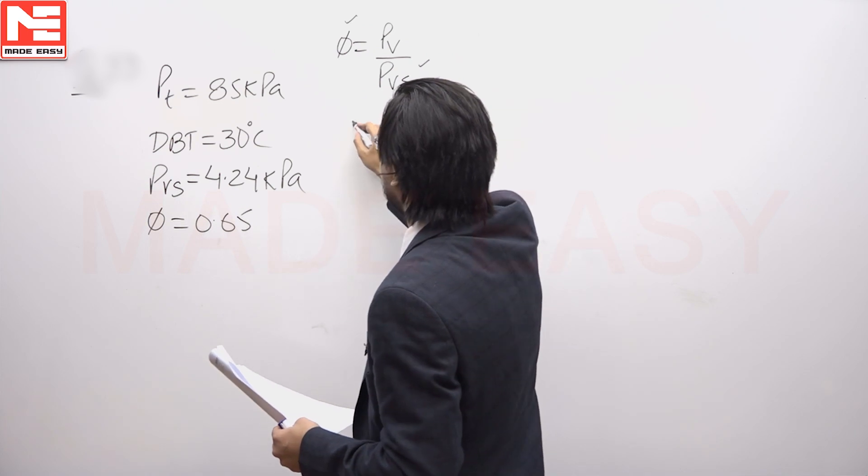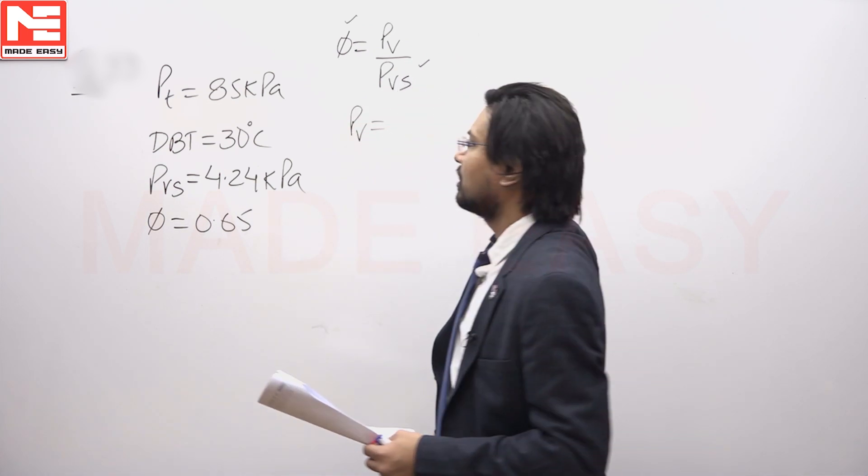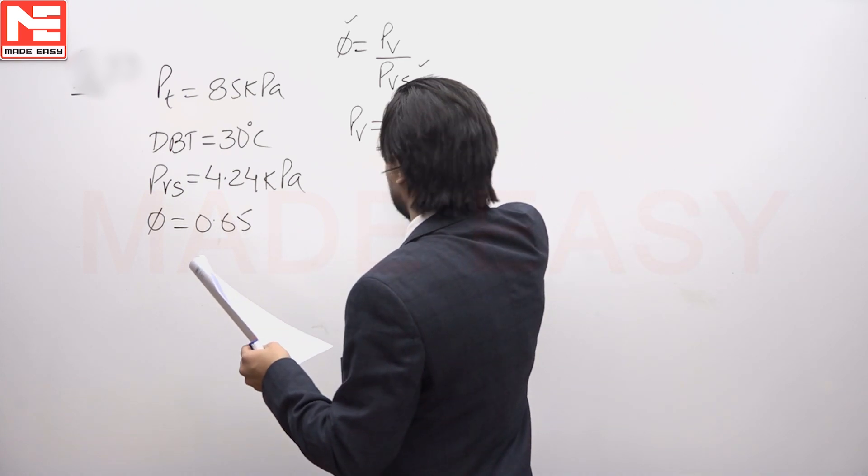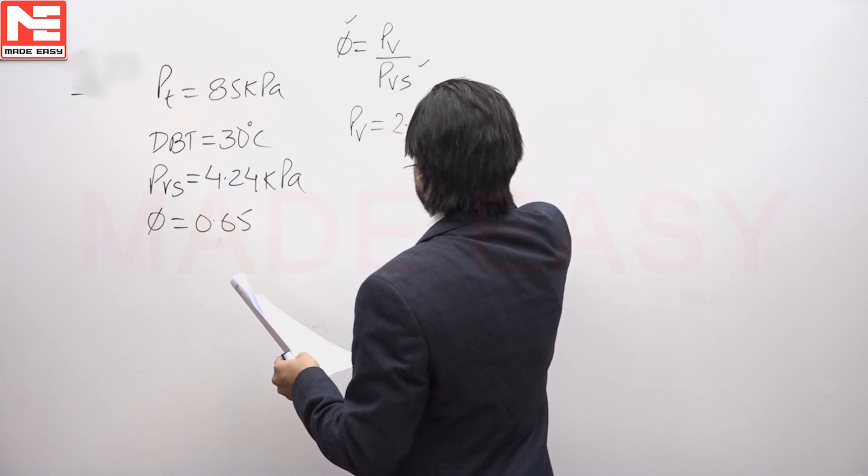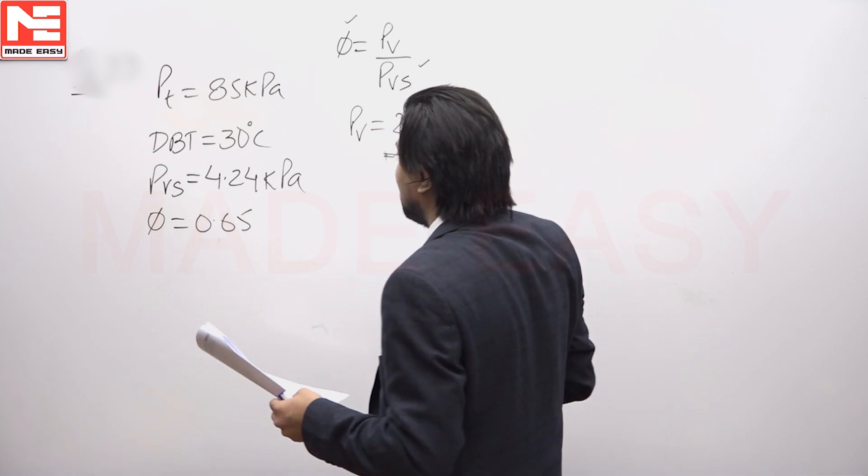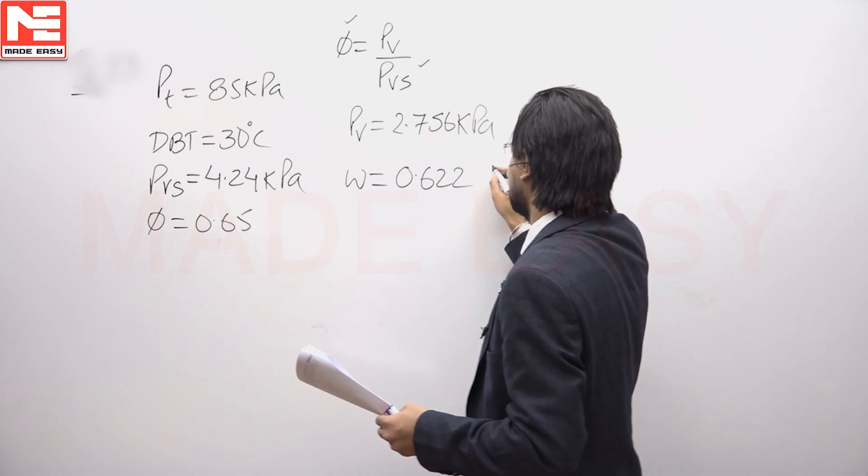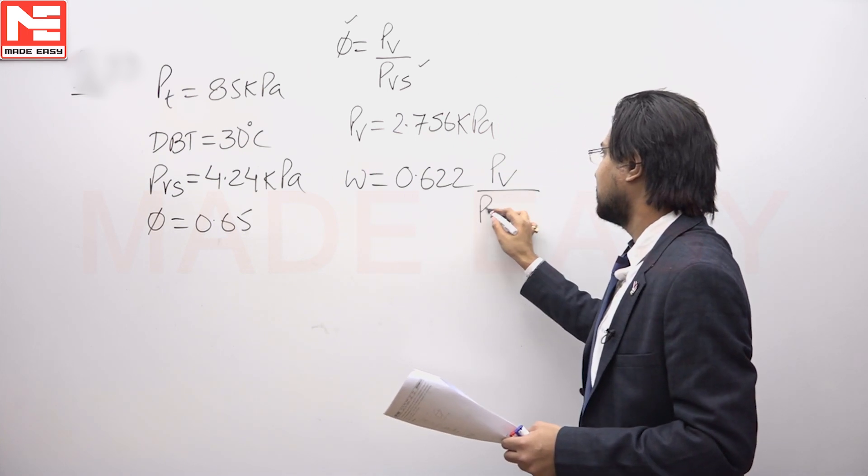This is known to us. We will find out the partial pressure at this condition. So, partial pressure comes out to be 2.756 kilopascal, and omega equals 0.622 Pv upon Pt minus Pv.